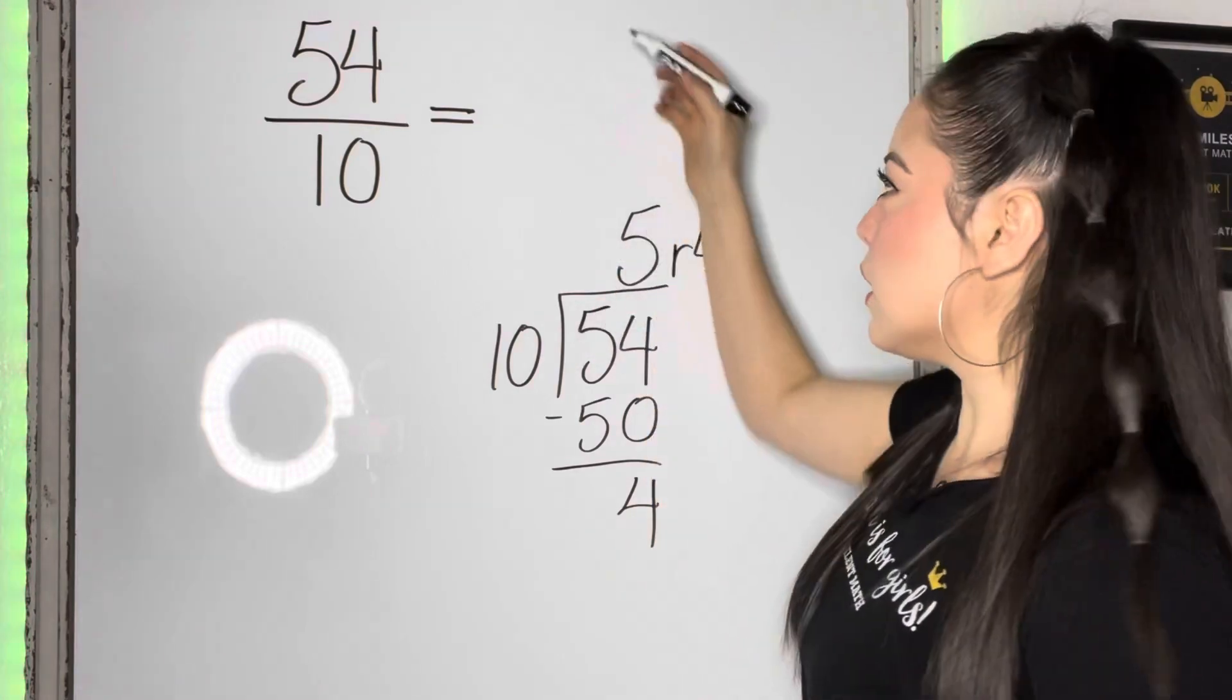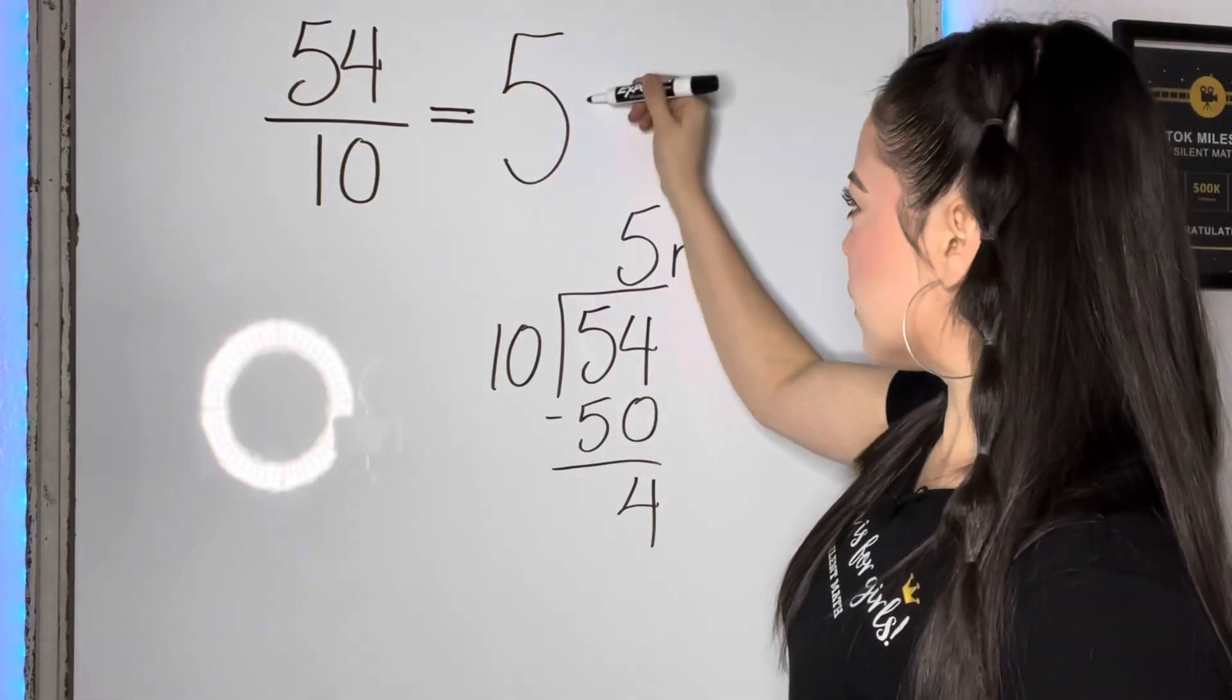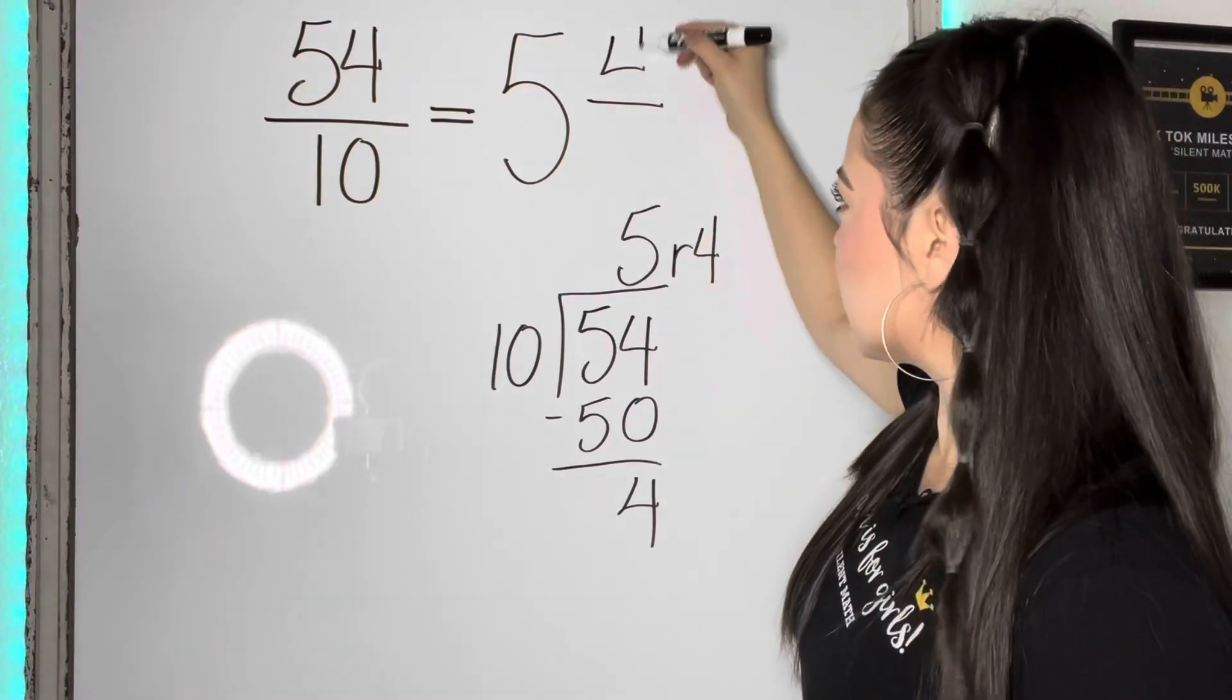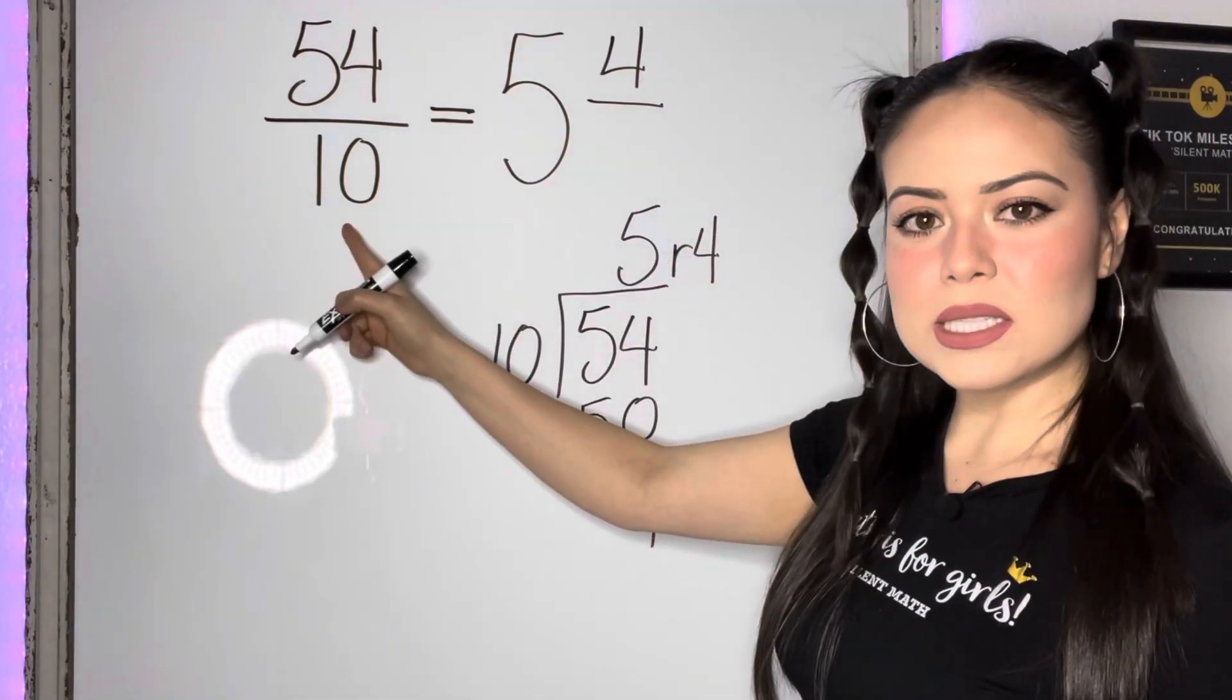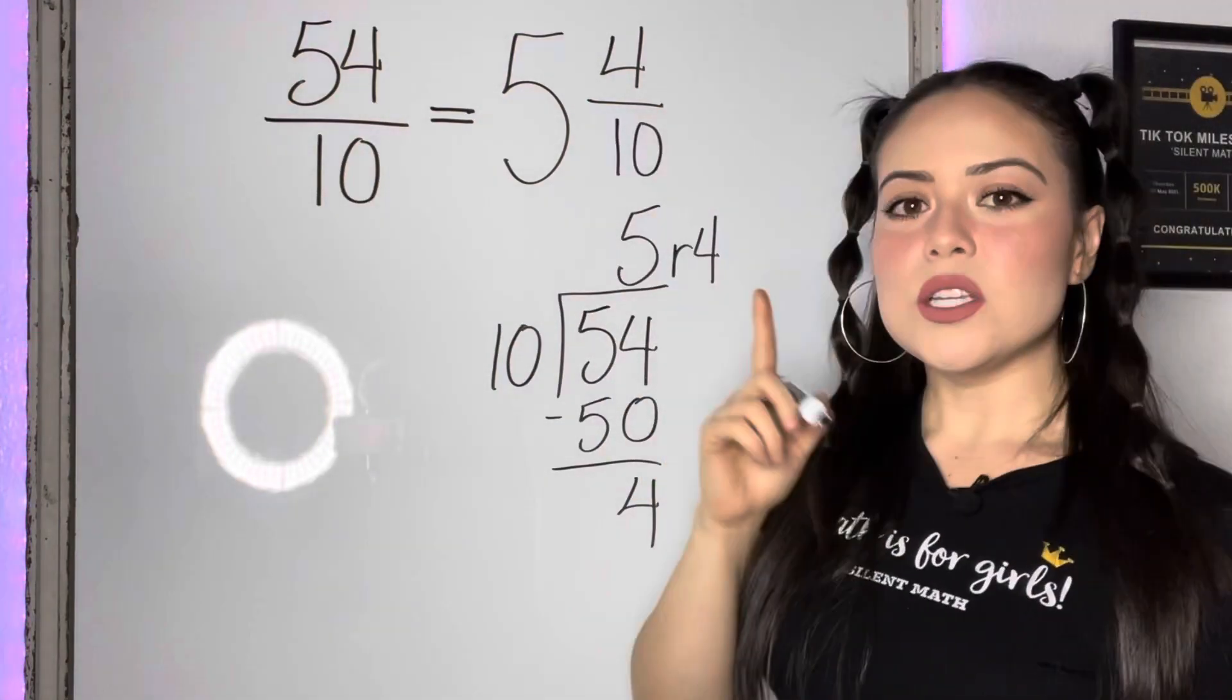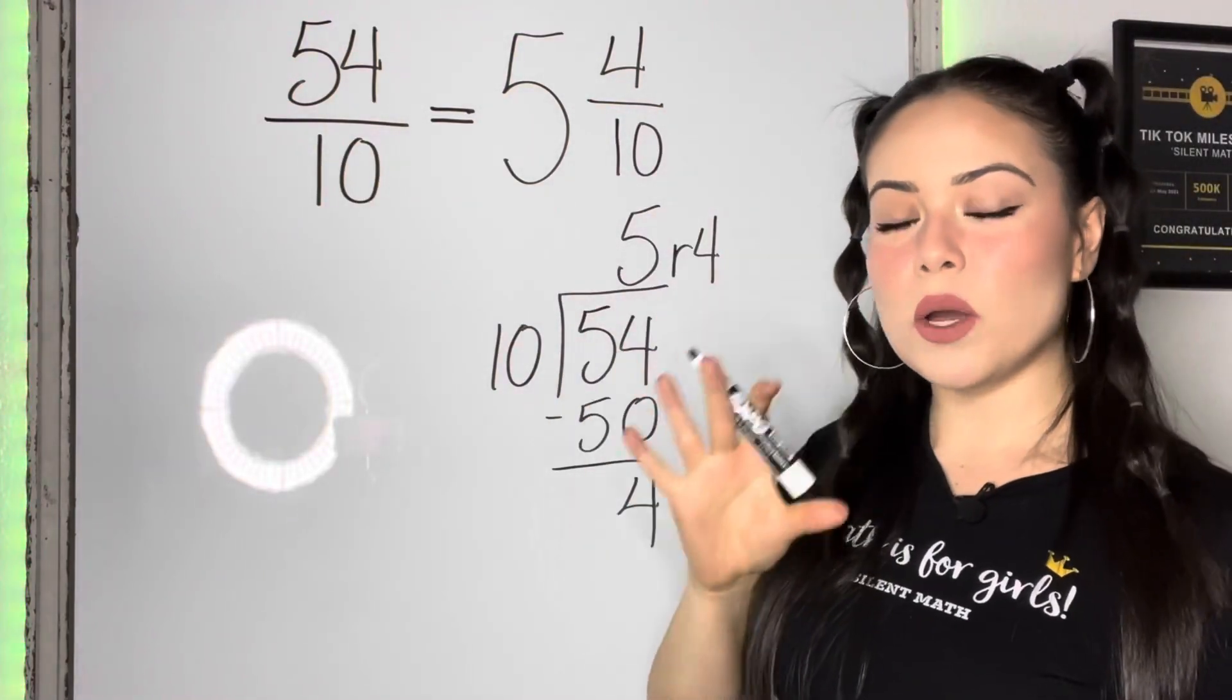So the five will be the whole number of your mixed number. The four will be the numerator of your mixed number. And then let's copy the 10, the denominator from the improper fraction, onto your mixed number. So for this problem, we have just one more step.